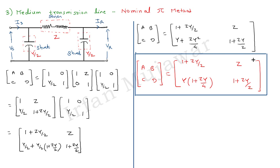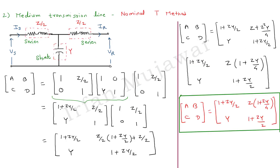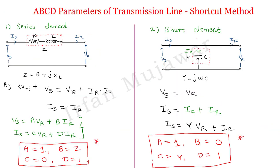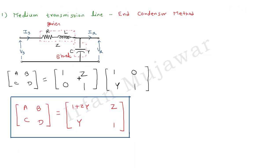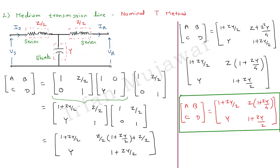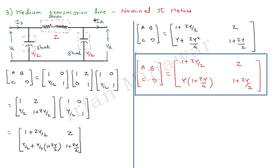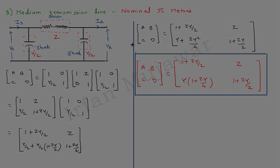These are the ABCD parameters of the nominal pi method. This matrix shortcut method makes it very easy to find the ABCD parameters of any transmission line — we just need to remember the ABCD parameters of the series element and shunt element. We have calculated all three medium transmission line methods: end condenser, nominal T, and nominal pi. Thank you.